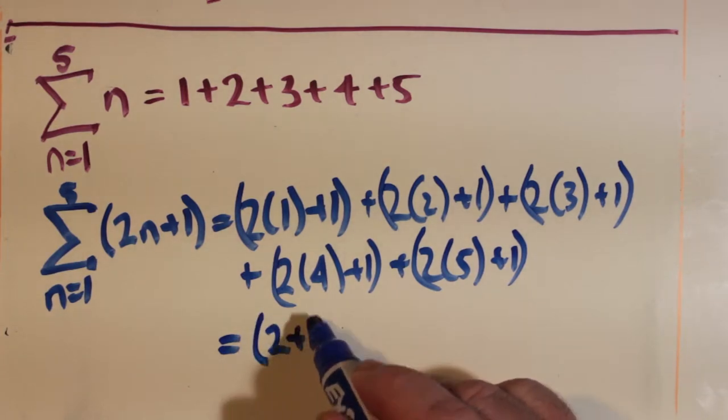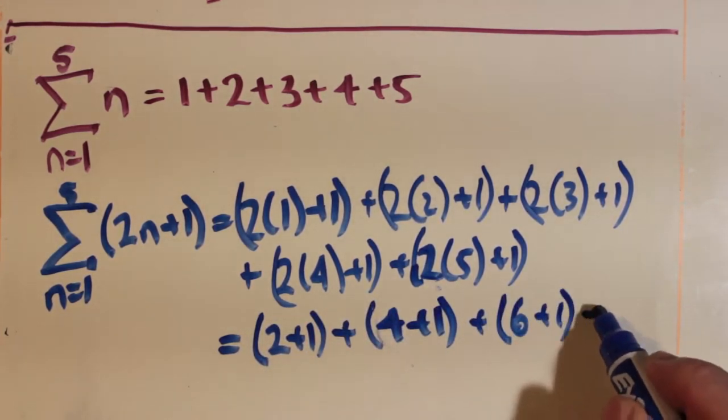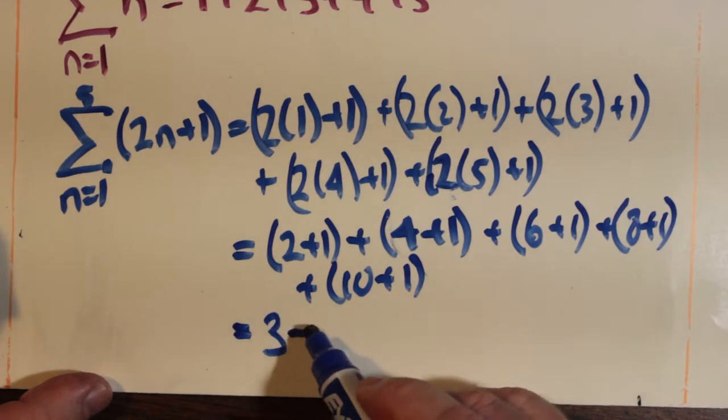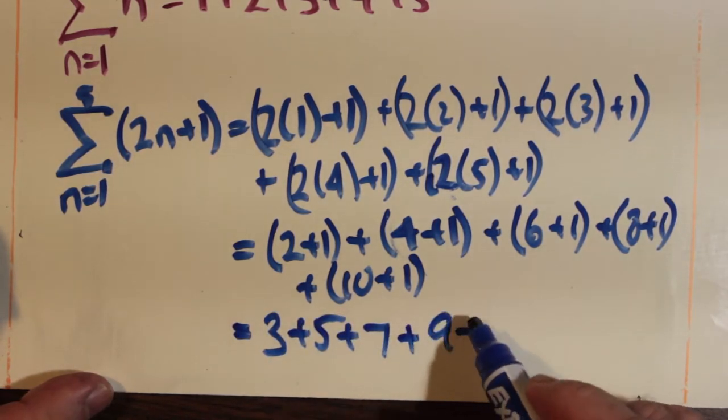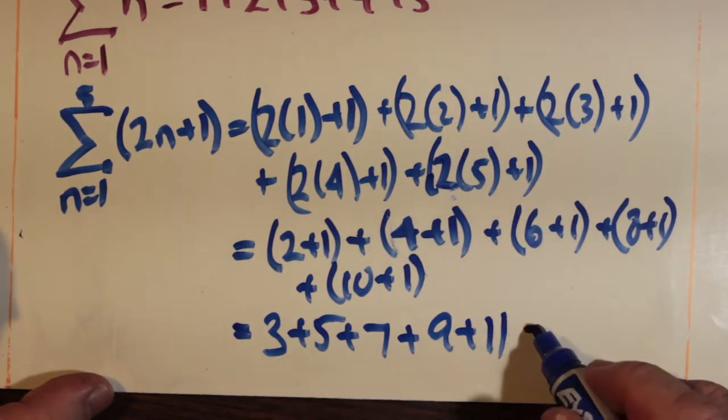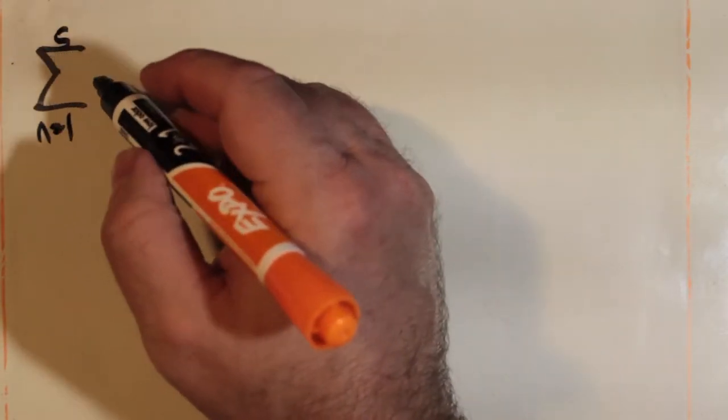Now we can also change the formula to be anything else such as 2n plus 1 and you notice that the n seems to just consistently get replaced with 1, 2, 3, 4, and 5 in sequence and ultimately we end up with the 5 terms 3 plus 5 plus 7 plus 9 plus 11 and that adds up to 35.